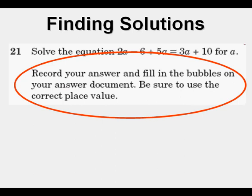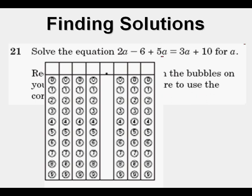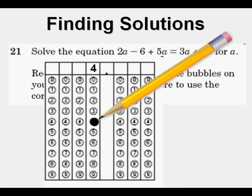Now we fill in the griddable answer sheet. Enter the answer to the left of the decimal point since it's an integer, then pencil in the 4 in the circle with a number 2 lead pencil. Be careful to mark integers to the left of the decimal point — if you enter it to the far right, the machine reads it as 0.004. The correct answer is 4.